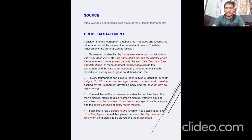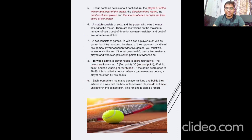The matches of the tournament are identified by types like singles, doubles, for men's and women's and mixed too. The number of matches to be played in each category and the entire schedule of every match should also be included. Each fixture has a unique fixture ID which holds details about the player IDs, the matches played between them, the day, date and time of the match, where it is to be played, and the match result. The result contains details about each fixture — the player ID of the winner and loser, the duration, number of sets played, and the scores of each set with the final score.